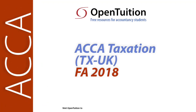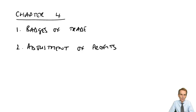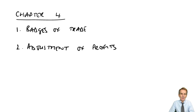This is a lecture from Open Tuition. To benefit from the lecture, you should download the free lecture notes from opentuition.com. Chapter 4 is the first of five chapters that focus on the unincorporated trader. What we've seen so far is that for the unincorporated trader, on an income tax computation for a tax year, we'll see a trading profit assessment.